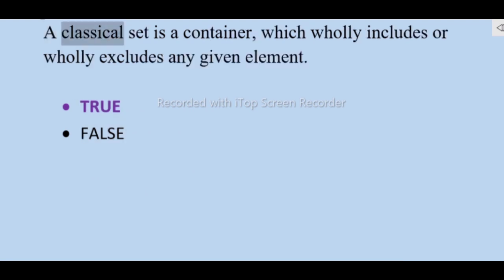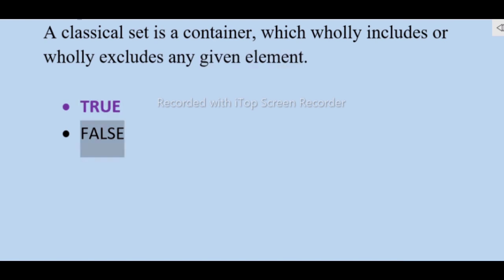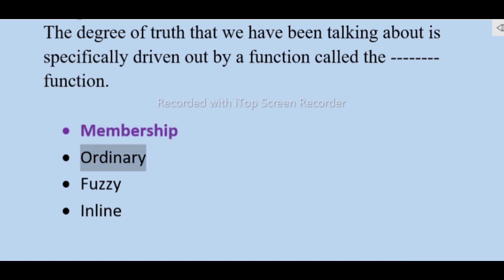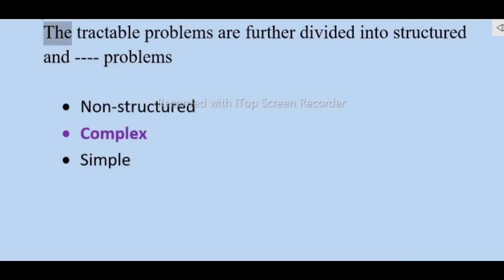A classical set is a container which wholly includes or wholly excludes any given element — true. The degree of truth we have been talking about is specifically derived by a function called the membership function.